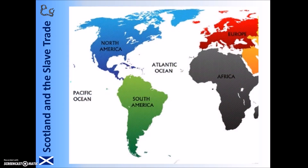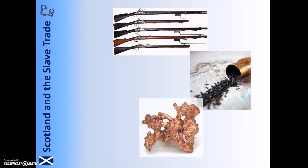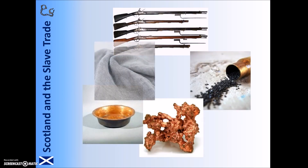The slave trade was often known as the triangular trade, because of the three journeys which were involved. In the first part, slave ships would leave European countries carrying various goods, which were then sold or traded in Africa in exchange for the Africans who would become slaves. These goods included guns, gunpowder, copper, pots and pans, and cloth.